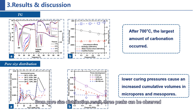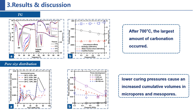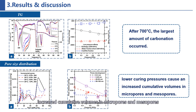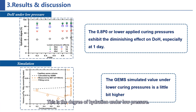From the pore size distribution results, three peaks can be observed. From Figure B, lower curing pressures cause increased cumulative volumes in micropores and mesopores but have marginal effects on macropores.